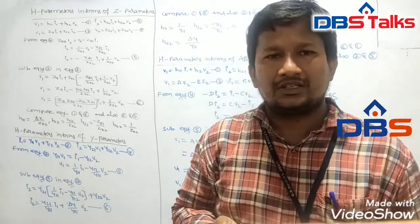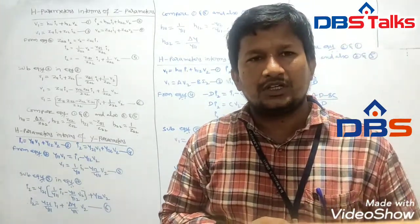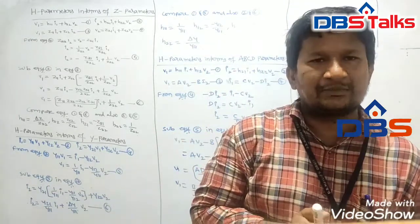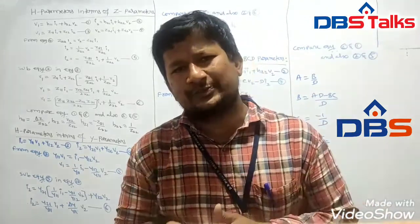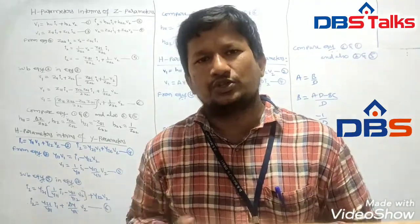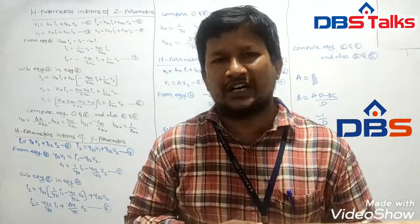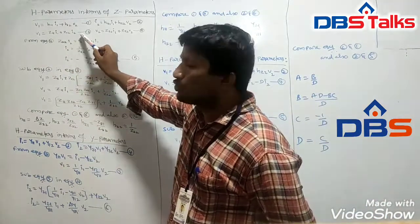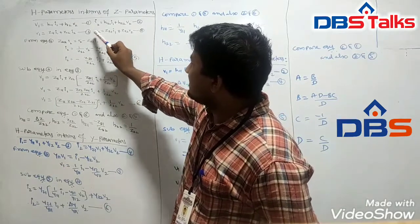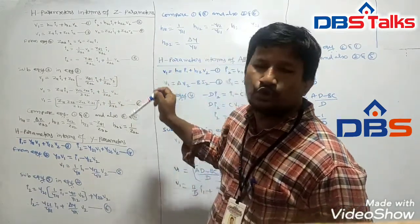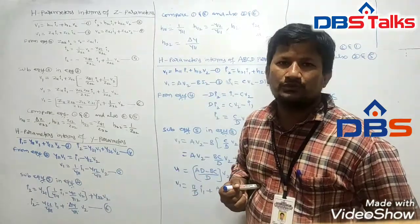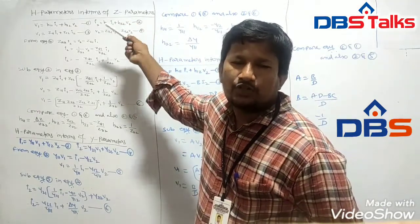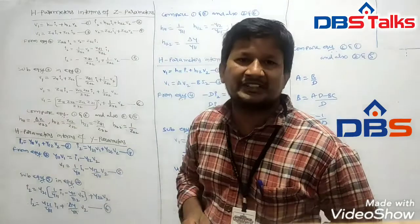Now, coming to the definition of Z parameters: input voltage and output voltage — that is, voltage parameters — must be expressed in terms of current parameters, that is input current and output current. So V1 = Z11·I1 + Z12·I2 (equation 3), and V2 = Z21·I1 + Z22·I2 (equation 4). From these four fundamental equations, I have to derive the interrelation between H parameters and Z parameters.